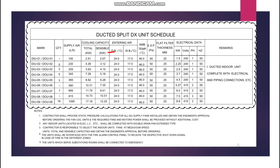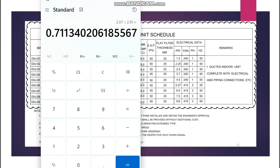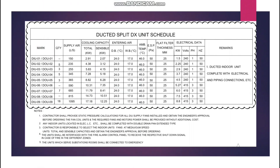Coming back to the HVAC unit schedule for our application, the first unit has a sensible load of 2.07 kW and a total load of 2.91 kW. So SHR = 2.070 / 2.91 = 0.711. This means 71% is sensible load and the remaining 29% is latent load, which has to be removed by the cooling coil.